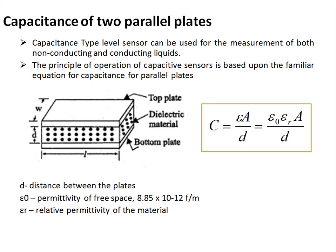εᵣ is the relative permittivity of the material, also known as the dielectric constant. A is the area of the plate and d is the distance between the plates. By varying any of these parameters — dielectric constant, area, or plate separation — the capacitance changes, and by measuring capacitance, these variations can be detected. This type of capacitor-based level sensor can be used for both conducting and non-conducting liquids.